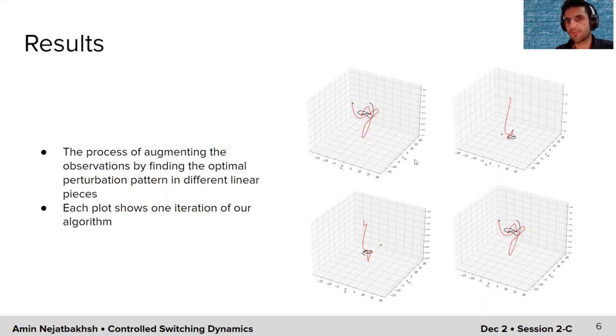Ideally, if you have a perfect fit, we would want these two to be on top of each other completely. But if they're not on top of each other, every time that we are finding this control law, we're going to add it to the observations and refit the model.